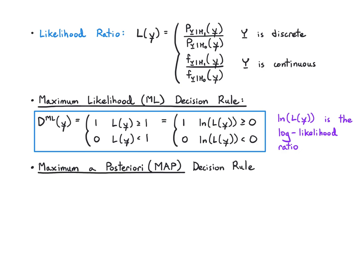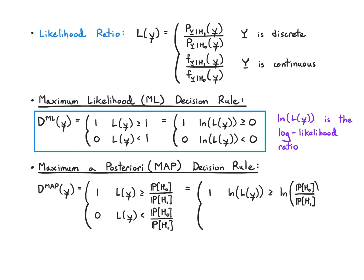For the MAP rule it's again the same thing except now I use a weighted threshold that uses the hypothesis probabilities which I need to know in advance. So I'm either comparing to probability of H0 over probability of H1, or if I take the log of both sides because that's more convenient, I end up comparing to log of probability of H0 over probability of H1. But this is all the same as we saw with the likelihood ratio.